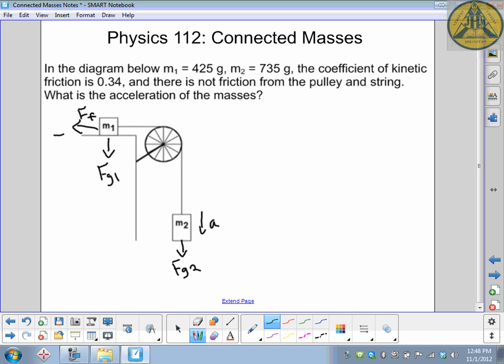So we'll get our directions. Anything acting to pull that M1 mass to the left of that table is negative. Anything acting to pull it to the right or down off the side is a positive force.